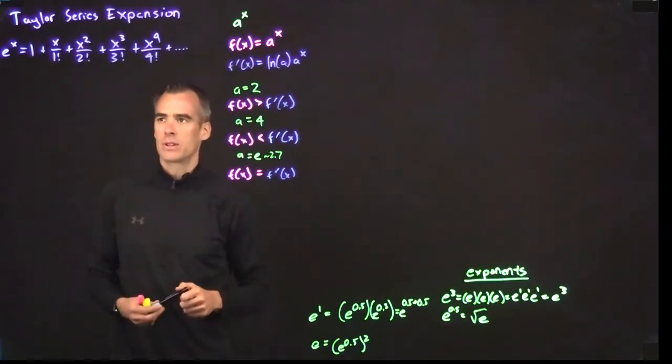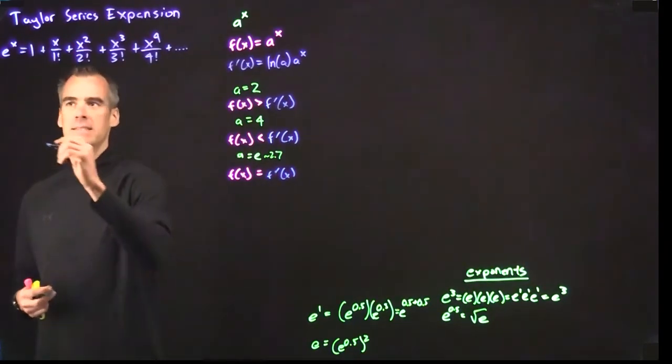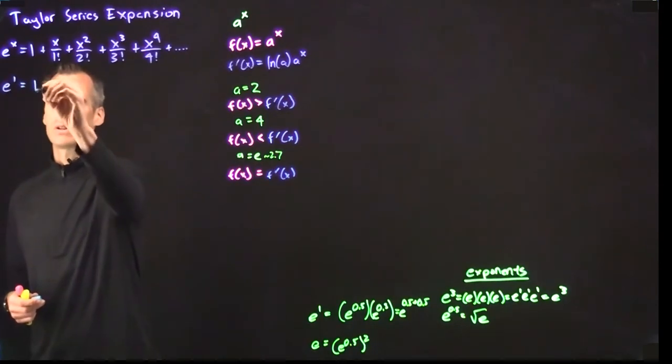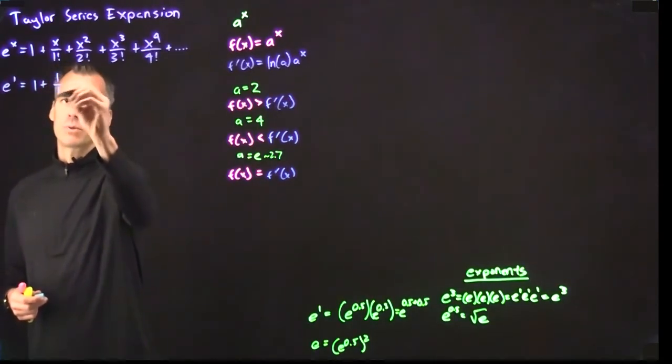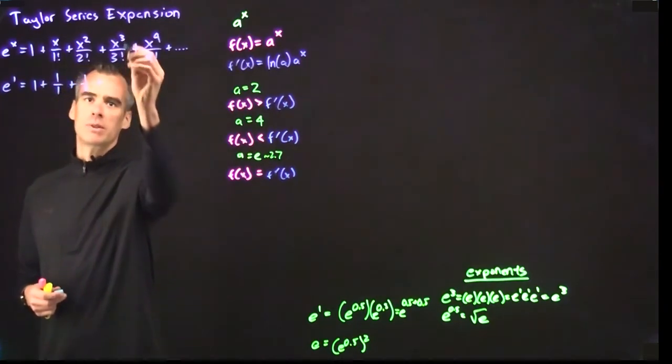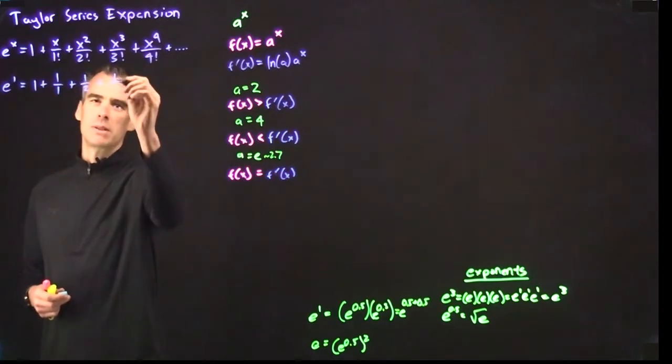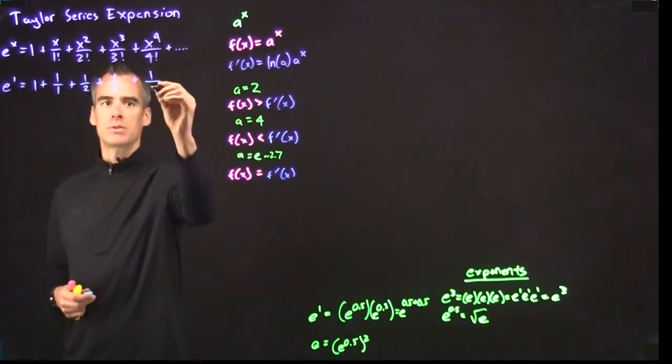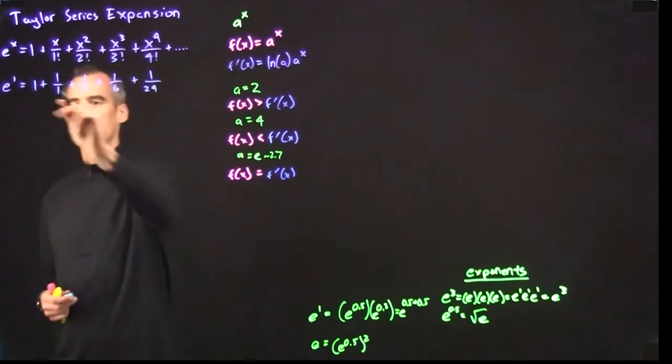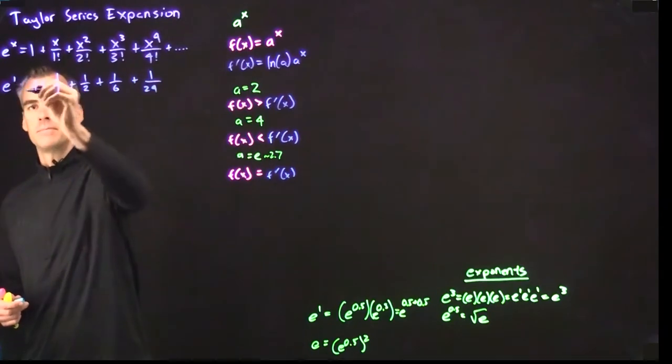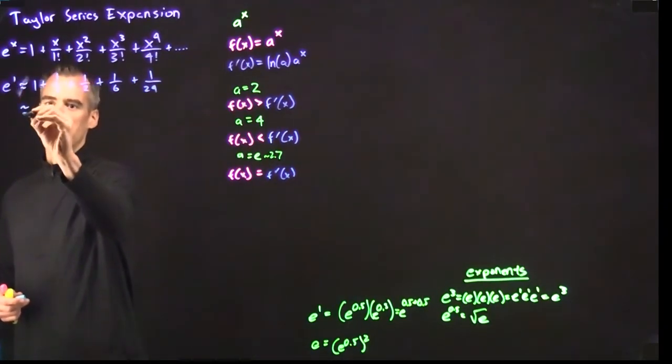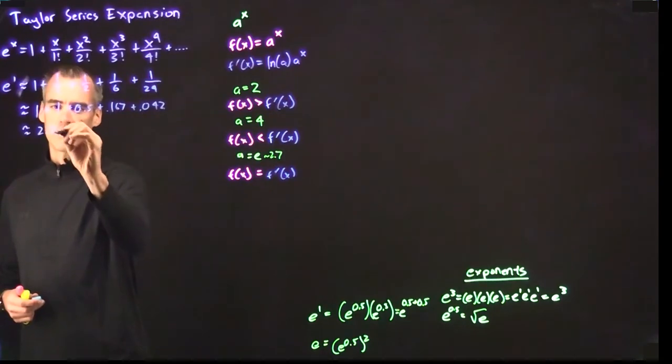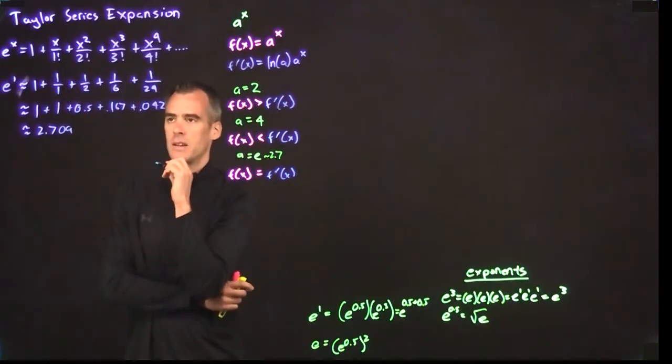The Taylor series expansion for e to the x is e to the x equals 1 plus x over 1 factorial plus x squared over 2 factorial plus x cubed over 3 factorial plus x to the 4th over 4 factorial. Hopefully you can see this pattern developing and it's going to keep going on infinitely. This infinite series is going to be equal to e to the x. Let's throw an example up there. Let's say e to the 1. E to the 1 is just 1 plus 1 over 1 factorial plus 1 squared over 2 factorial plus 1 cubed over 3 factorial, which is 6, plus 1 to the 4th over 4 factorial, which is 24. We're not going to do all these, so let's make this approximate, and it's going to be approximately 2.709. Simple enough, that's how you apply this Taylor series.